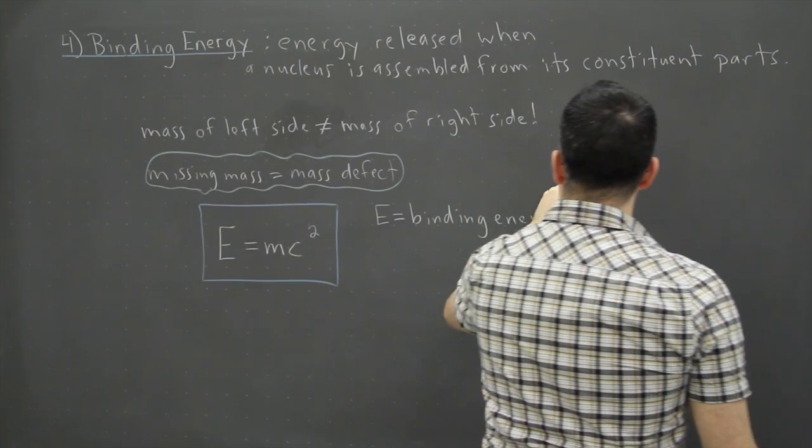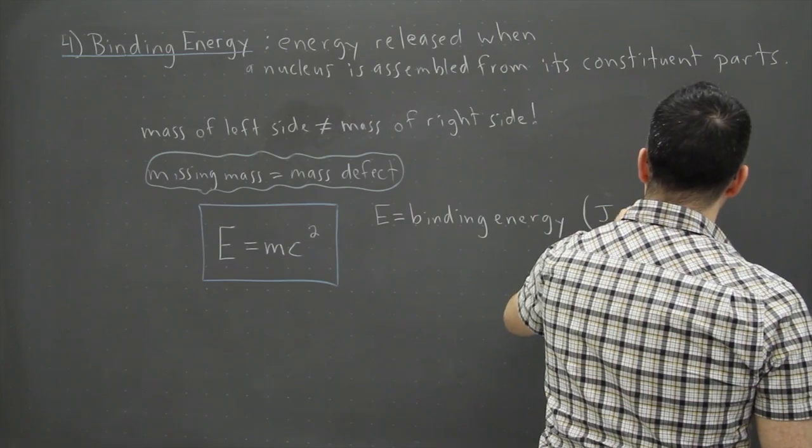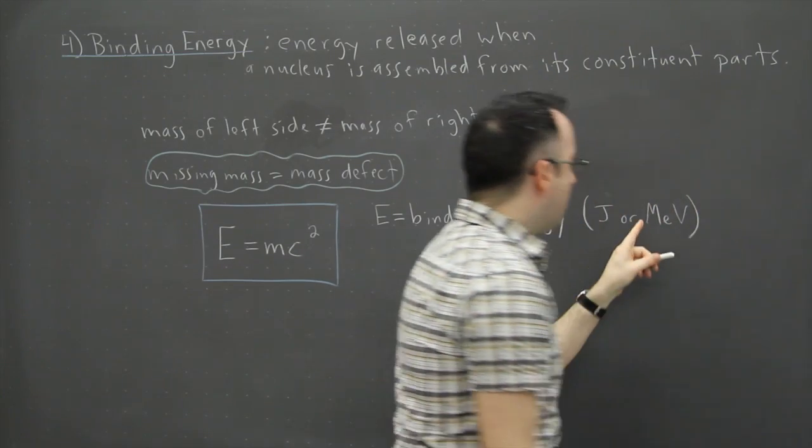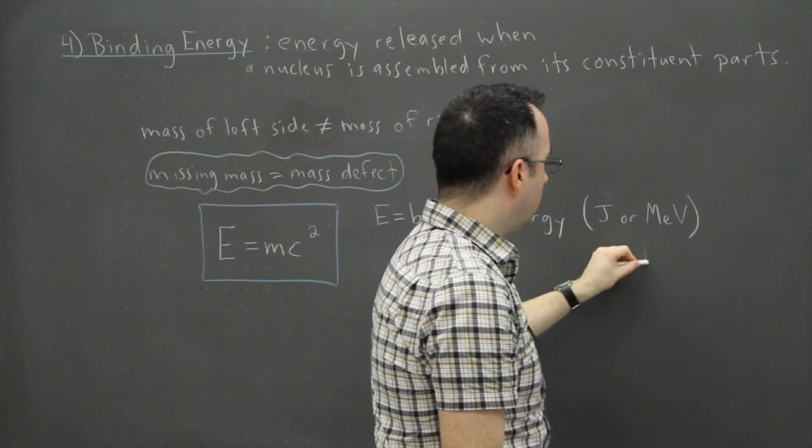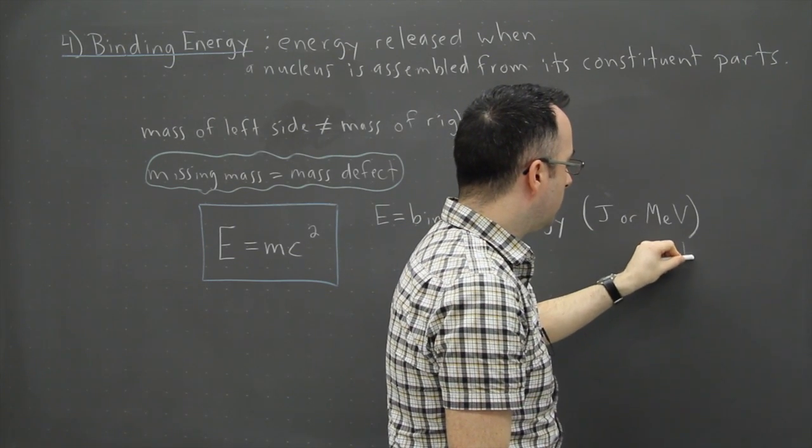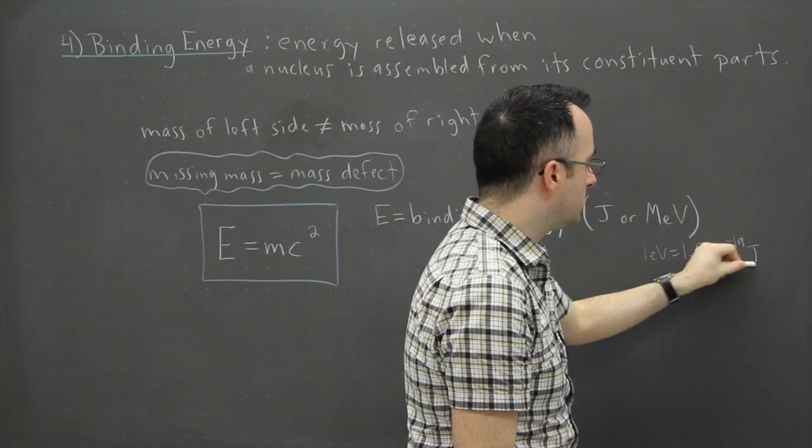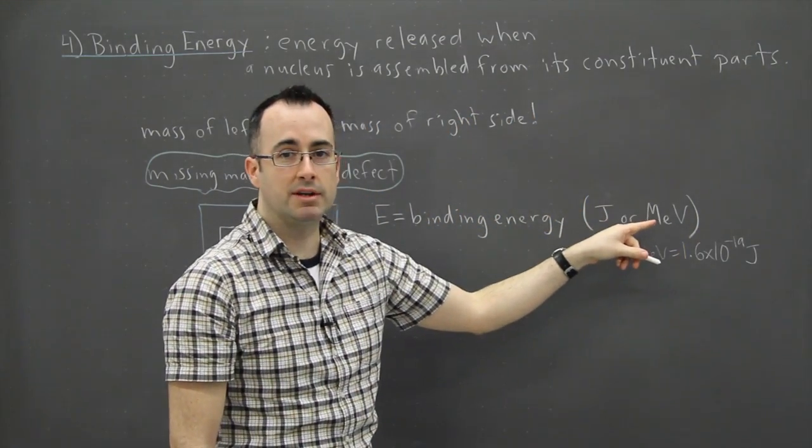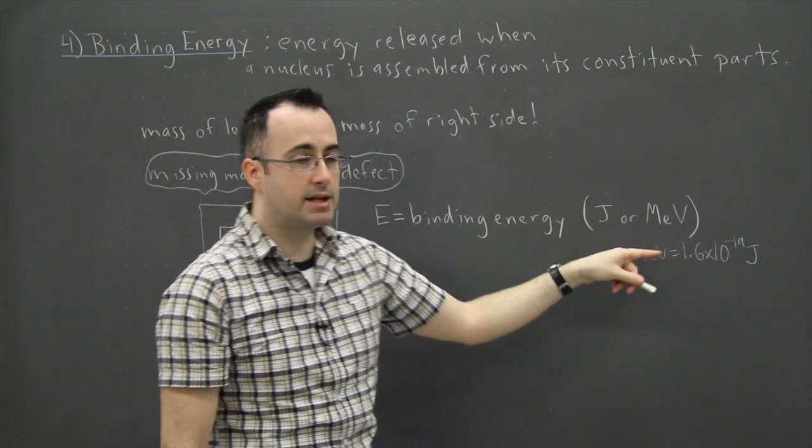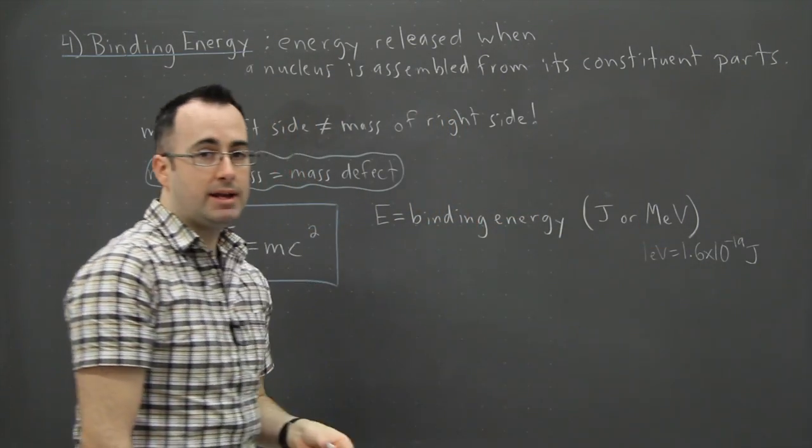Now this binding energy is going to be measured, it can be measured in joules, but more often it's actually measured in mega electron volts. Remember 1 eV equals 1.6 times 10 to the minus 19 joules, just in case you want to convert. And by the way you just have to do this times a million, right, because you have mega. Mega means 10 to the 6. That's a million. So that's the E, the binding energy.